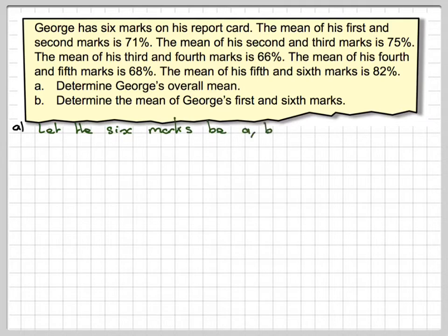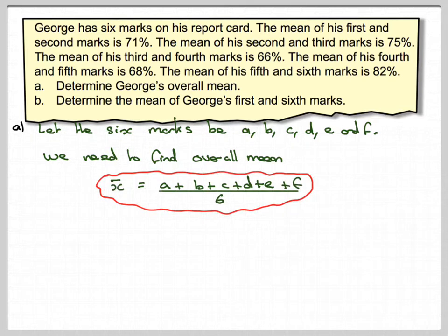Let the 6 marks be A, B, C, D, E, and F. We need to find the overall mean, so that means we're going to have to add up all the marks and divide by the number of marks, which is 6. This symbol here, x̄, means find the mean.